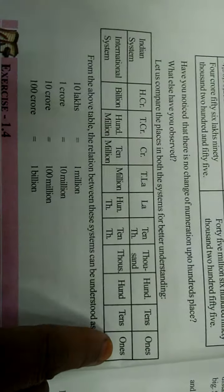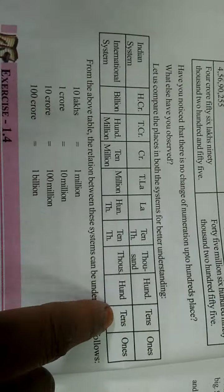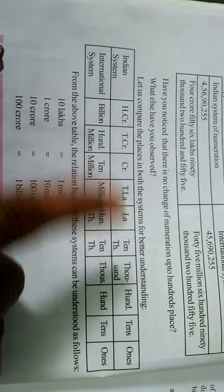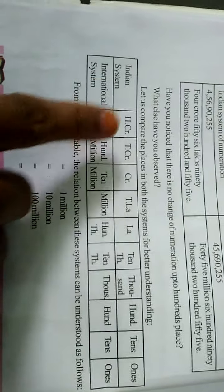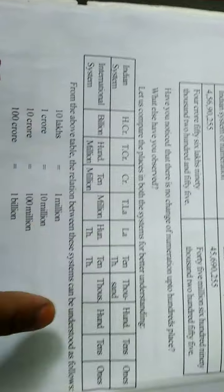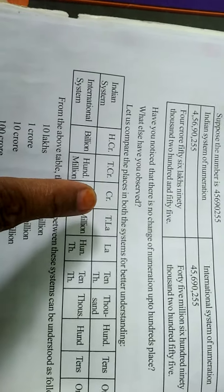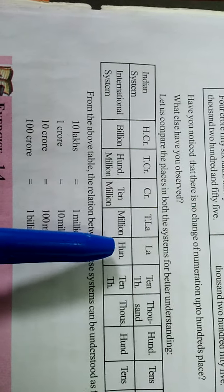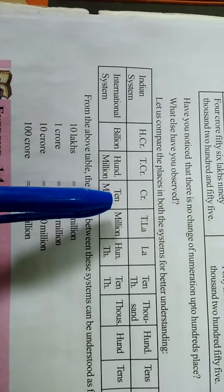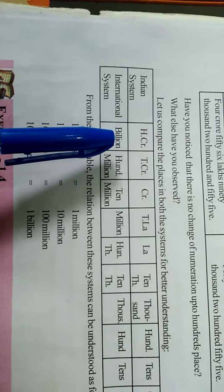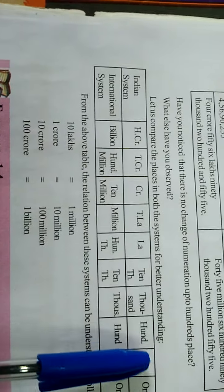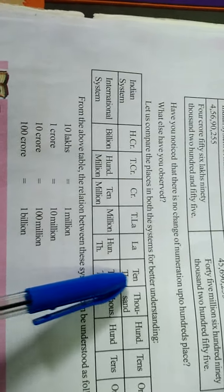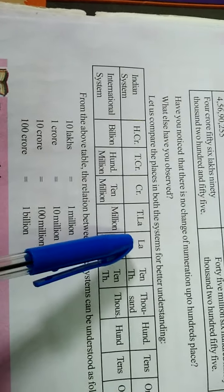In the Indian system: ones, tens, hundreds, thousands, ten thousands — these are the same in both Indian and International systems. The difference starts from here: in the Indian system the next place is lakhs, while in the International place value system it is hundred thousands. Then ten lakhs and crores follow in Indian. Up to ten thousand, both systems have the same place values; after ten thousand the places change.